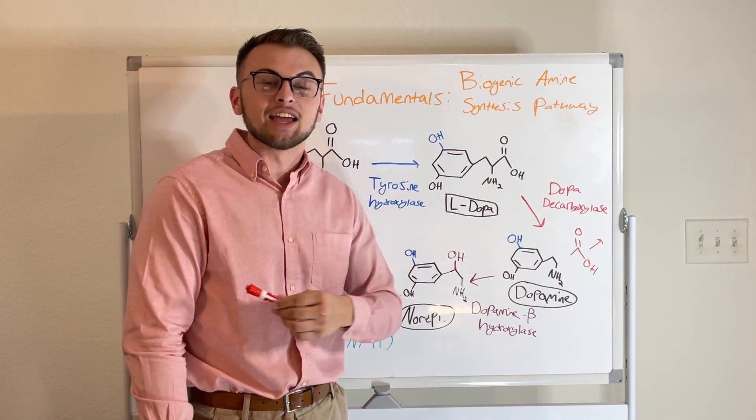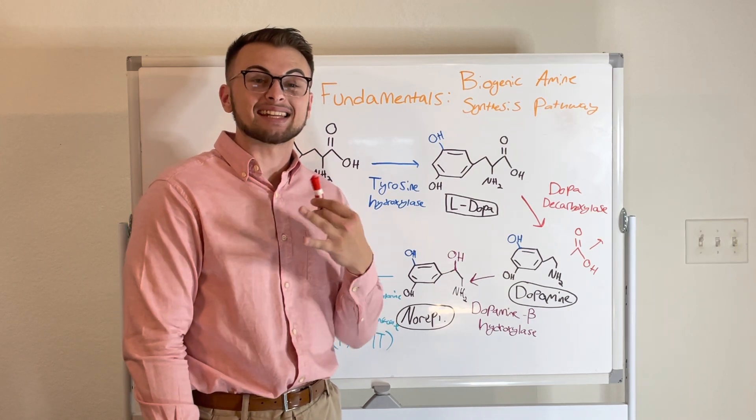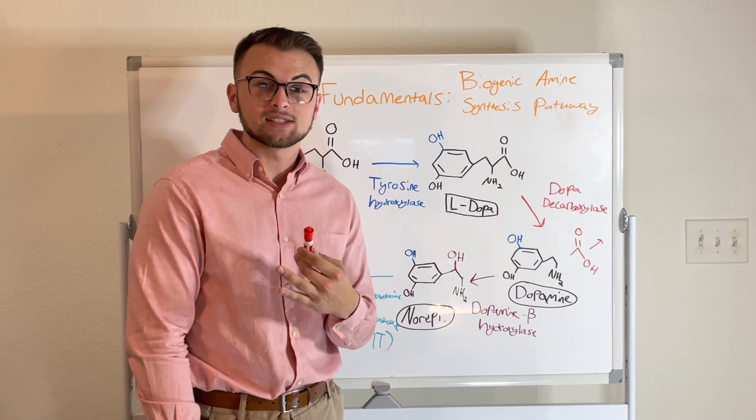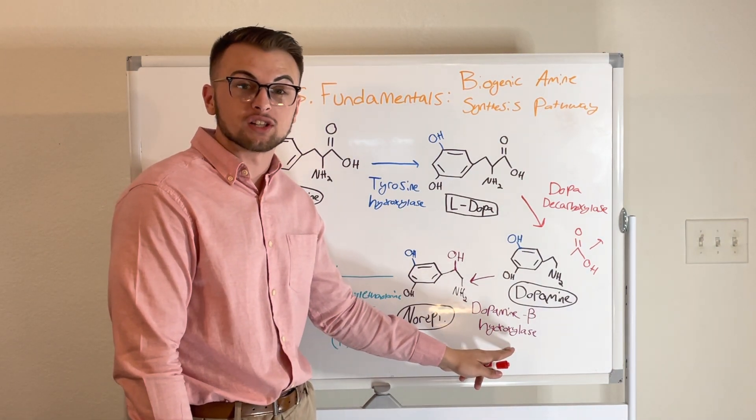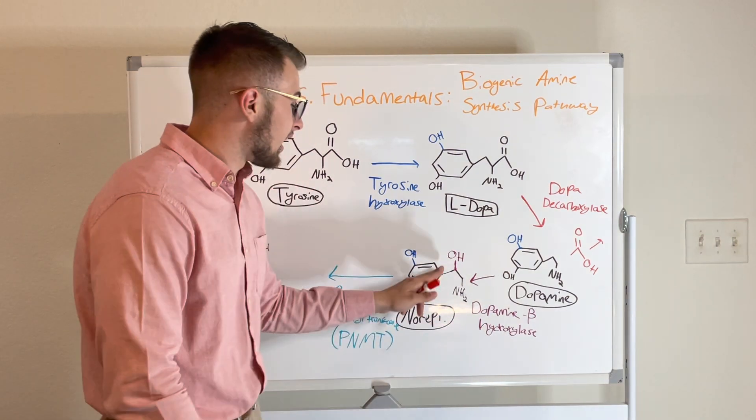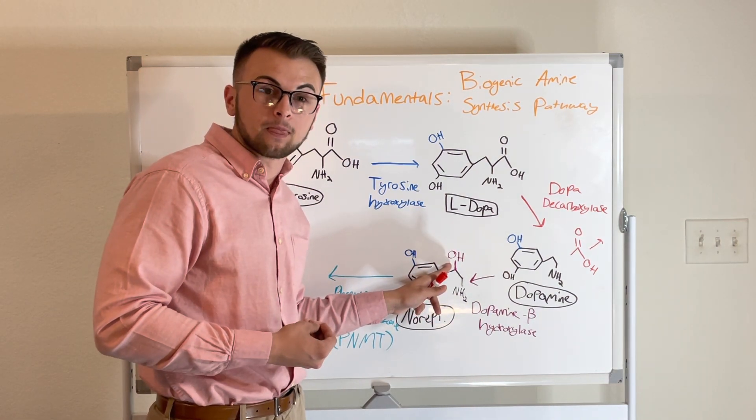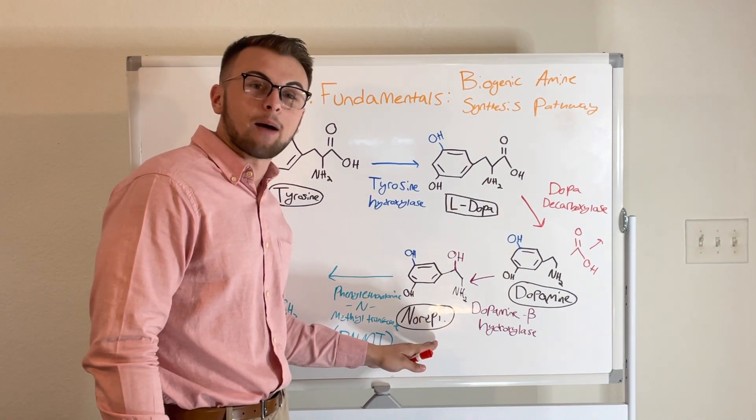Next, if we take our dopamine and put it in the same room as an enzyme called dopamine beta-hydroxylase, the enzyme dopamine beta-hydroxylase will add a hydroxyl group onto our dopamine. We will call this new substance norepinephrine.